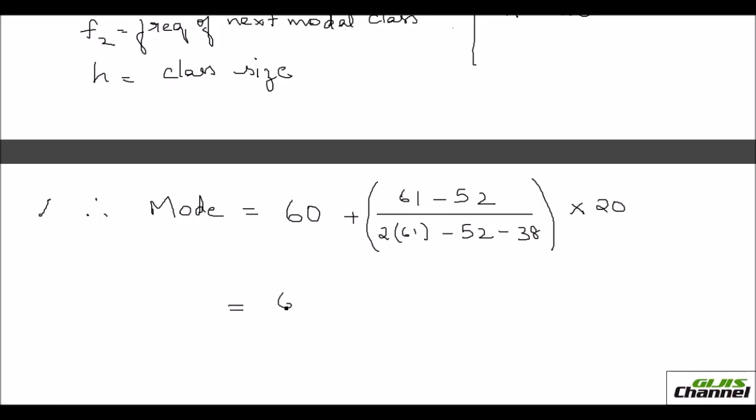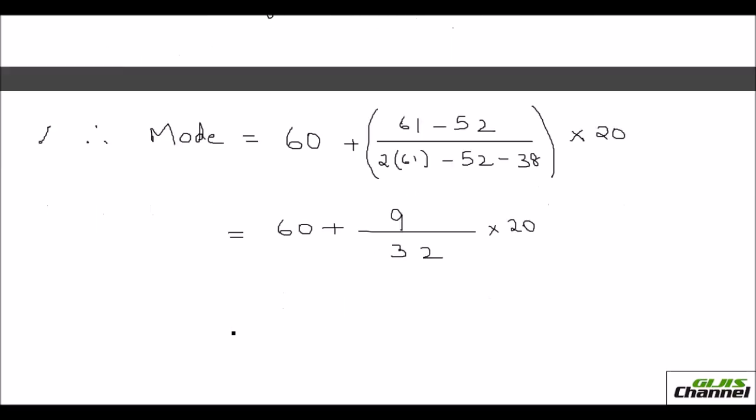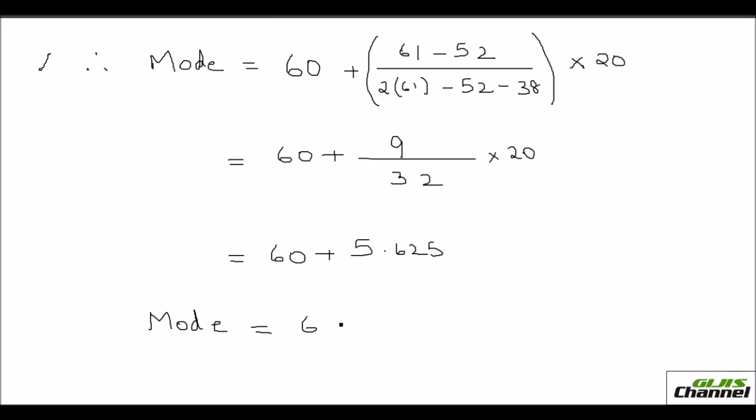So this would be like 60, plus here it is 9 on the numerator and the denominator it is 32 over 20. So this will give you 60 plus, when you solve this, you can use the calculator if you need it. You get 5.625 as answer. 9 times 20 divided by 32 is 5.625. So your mode is 65.625.